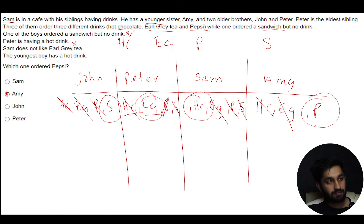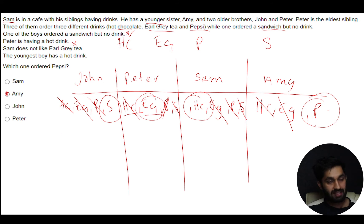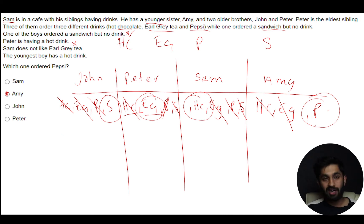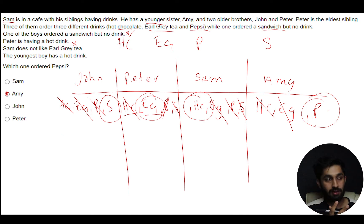Obviously talking through it sounds long-winded, but in the exam it will be much quicker with practice. The key technique is identifying the different variables — in this case: the age/height order, the names, and the drinks or sandwich. Usually there are two main variables you can put into a table. I ranked the age order first, then under each name wrote all possibilities, and crossed them out step by step until I arrived at the answer.